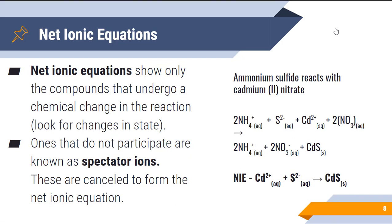The net ionic equations show only the compounds that undergo a chemical change in the reaction. So it's imperative for us to look at changes of state. Ones that do not participate are known as spectator ions. Think like a spectator watches as they are watching this reaction take place. These are canceled then to form the net ionic equation.